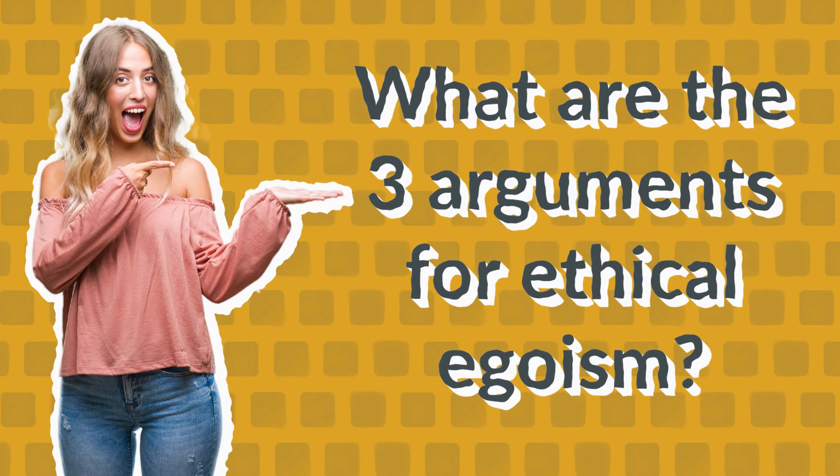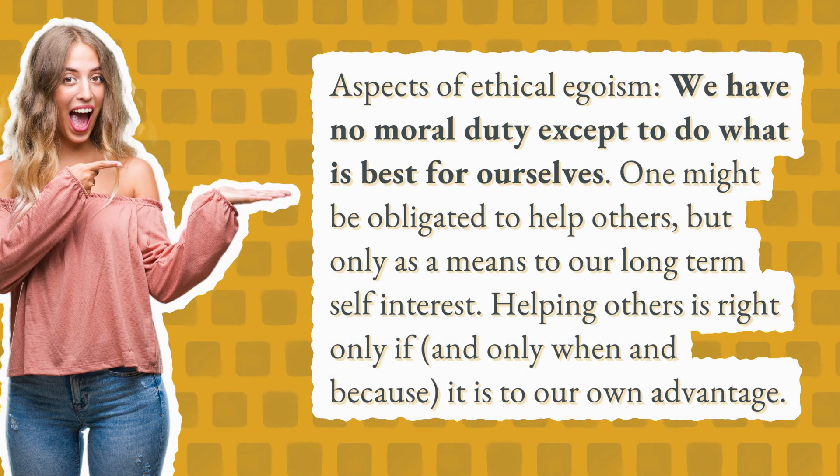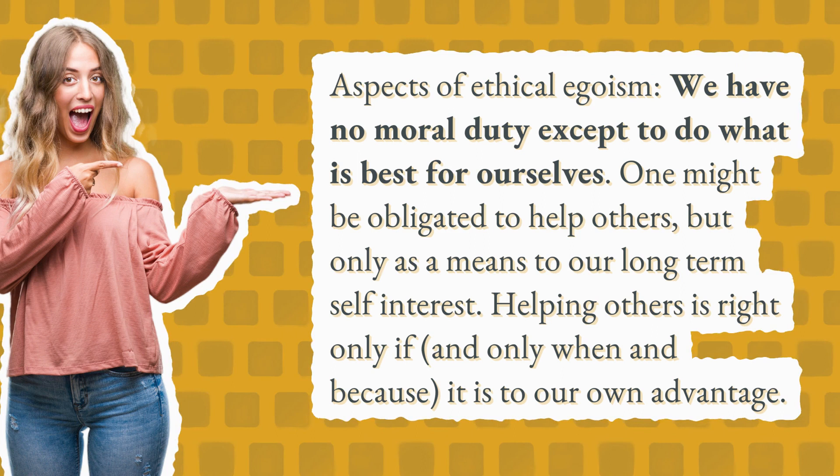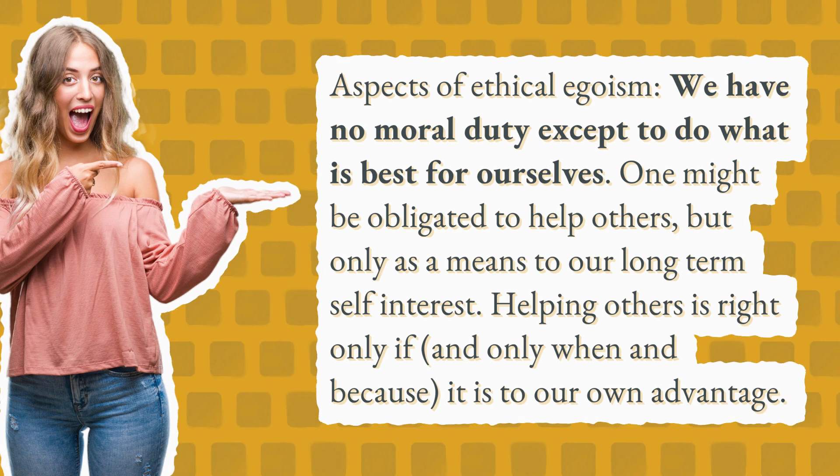What are the three arguments for ethical egoism? Aspects of ethical egoism: We have no moral duty except to do what is best for ourselves. One might be obligated to help others, but only as a means to our long-term self-interest. Helping others is right only if, and only when and because, it is to our own advantage.